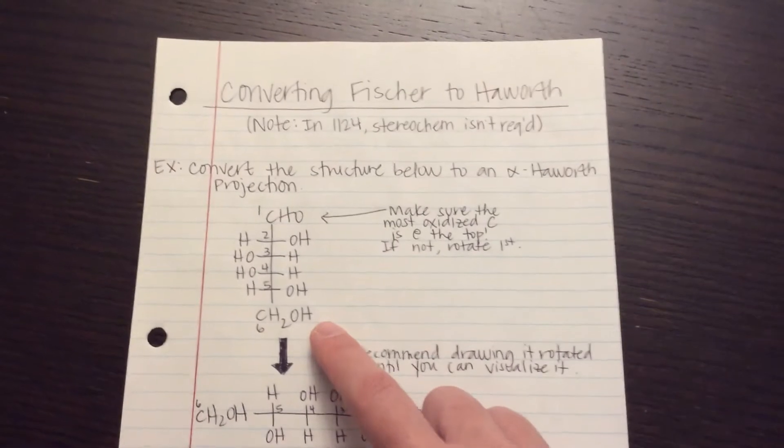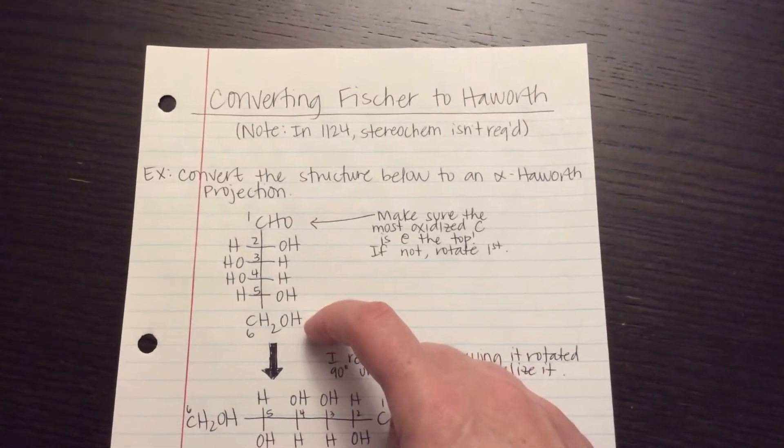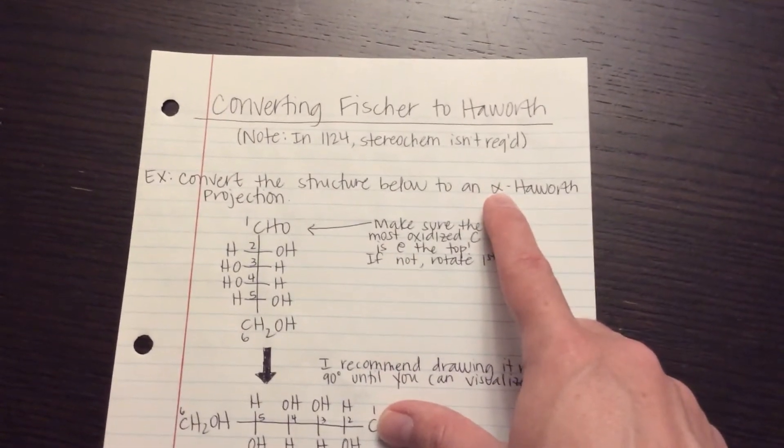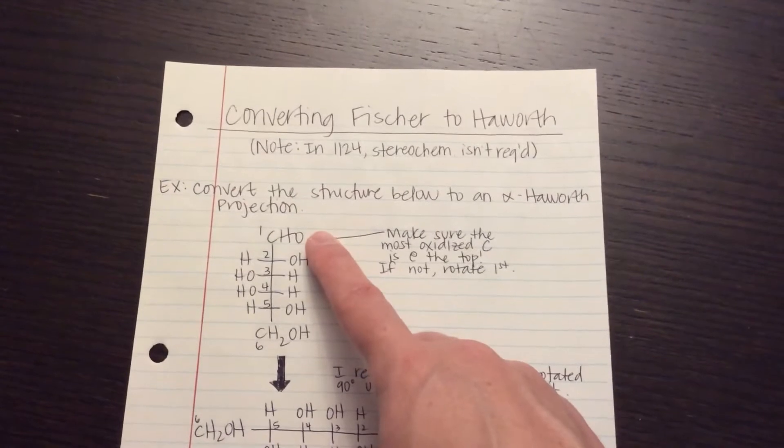So here would be an example problem. I give you this Fischer, and I ask you to convert it to a Haworth. And I want it to be in the alpha configuration. First thing you need to do is make sure that the most oxidized carbon is at the top.